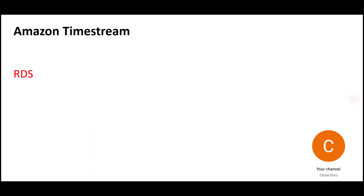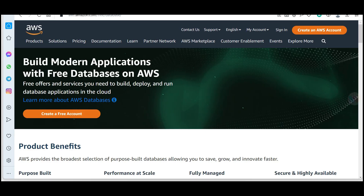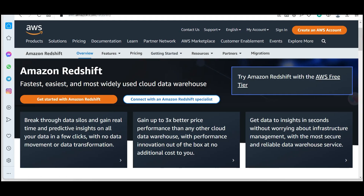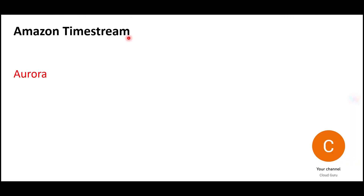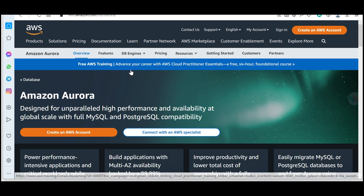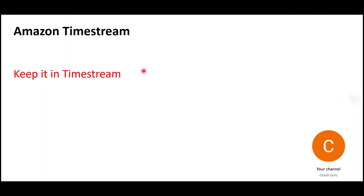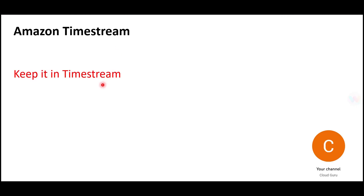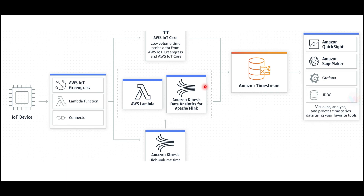So where would you save this real-time time-series data? Will you save it in RDS, which is an RDBMS relational database? Or put the data in Redshift, which is a cloud data warehouse? Or store it on Aurora, which is also a relational database? The answer is no — you cannot store it in relational databases because query performance will not be high. That is the reason Amazon created a product called Timestream. In older days we had a database called Informix, which was a time-series solution, and Timestream is Amazon's equivalent.